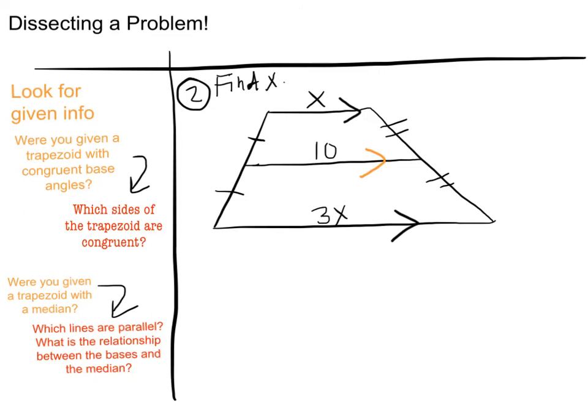So that means that I can conclude that the median is parallel to the bases and also that the median is the average of the two bases. That means that the median 10 is equal to the top base plus the bottom base divided by 2. So that's 10 equals 4x plus 2.